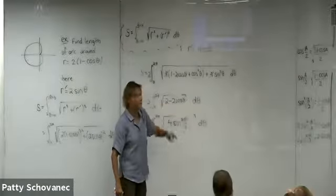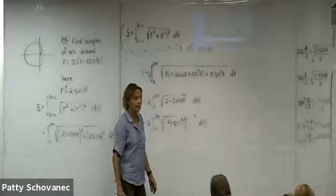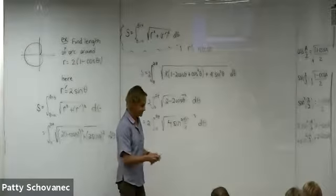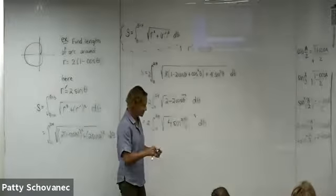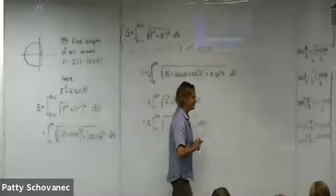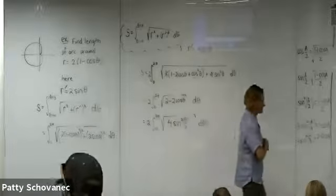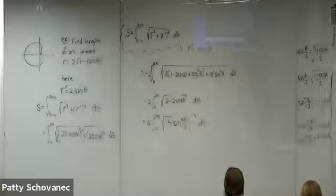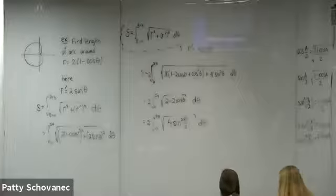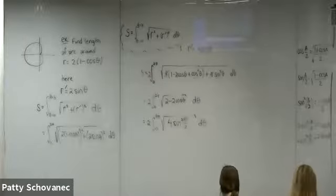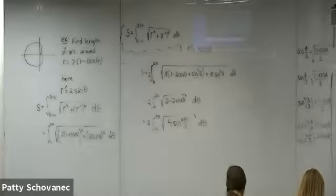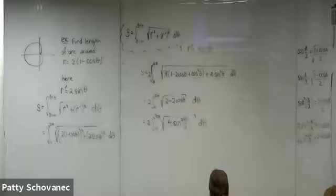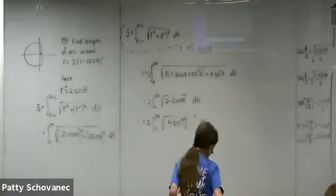Both arc length formulas — rectangular and polar — come from the Pythagorean theorem via the hypotenuse of a tiny right triangle, which is why there's always a square root with a plus sign (not minus). Students often make the mistake of writing a minus; remembering the derivation from the distance formula will help avoid that error.